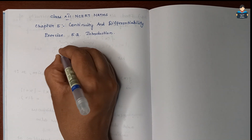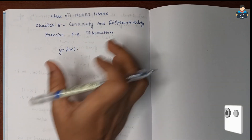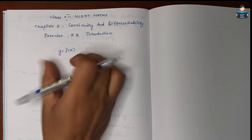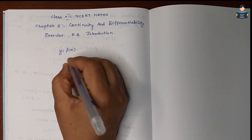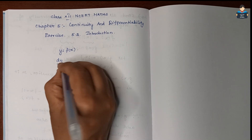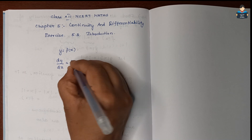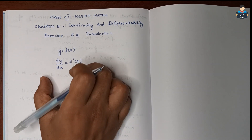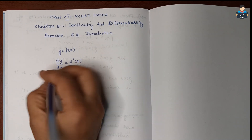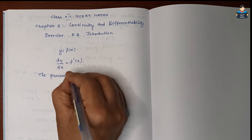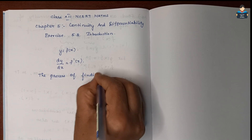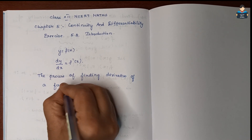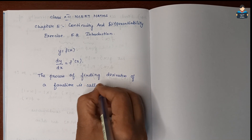For example, y equal to f of x. We will find out the derivative of f, that is f dash of x. So dy by dx is equal to f dash of x. The process of finding the derivative of a function is called differentiation.